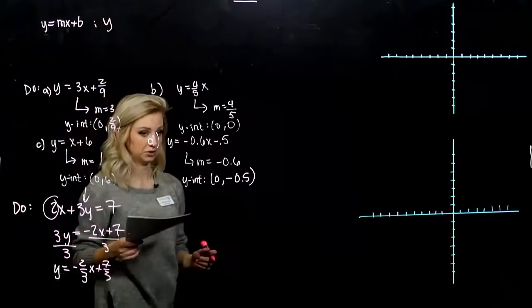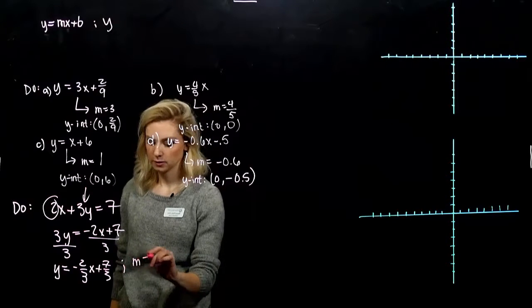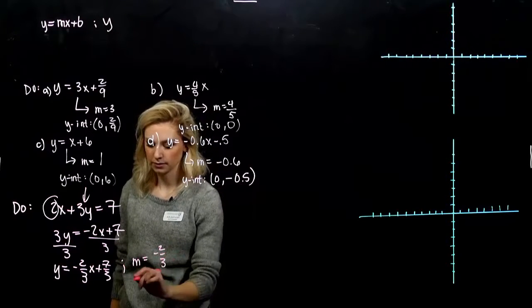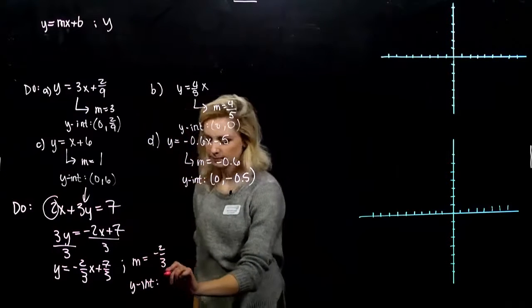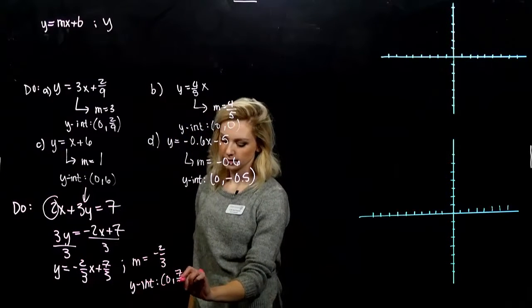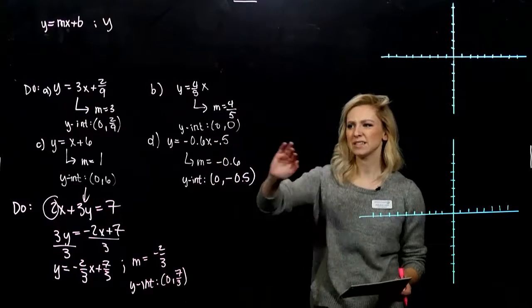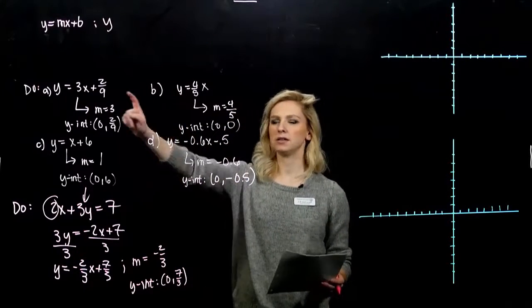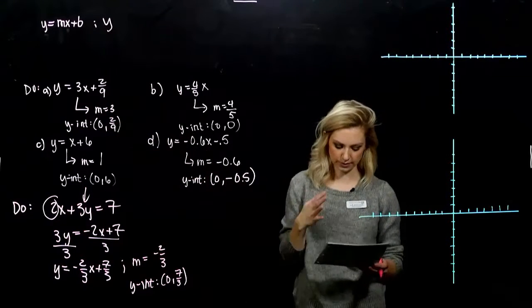So the slope really wasn't 2. What is the slope of this line? Slope is minus 2 thirds. And for the heck of it, where is the y-intercept happening at? 0, 7 thirds. So more often than not, it's not going to be given to you in this nice slope-intercept form, y equals mx plus b.